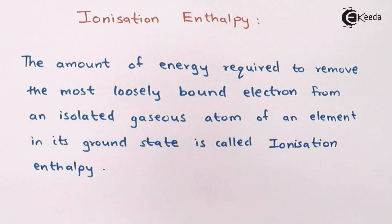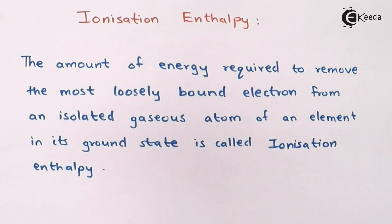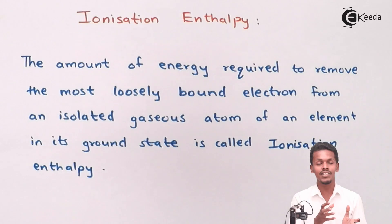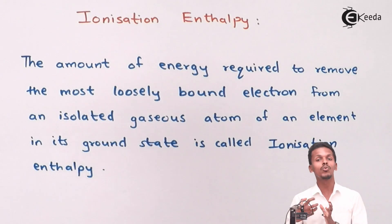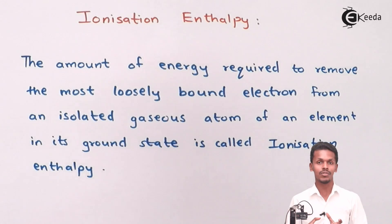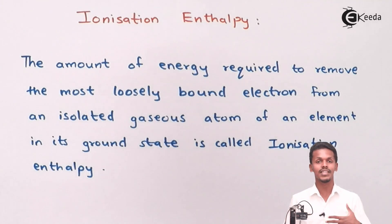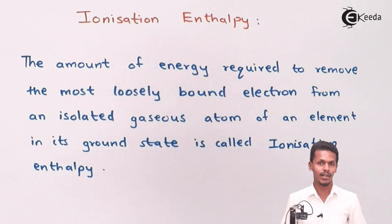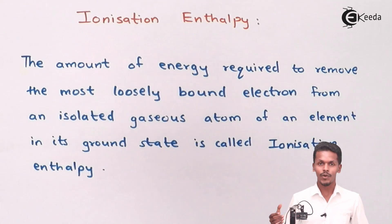We can remove one electron, or we can remove multiple electrons. The energy required to remove the first — the most loosely bonded — electron is known as the ionization enthalpy.